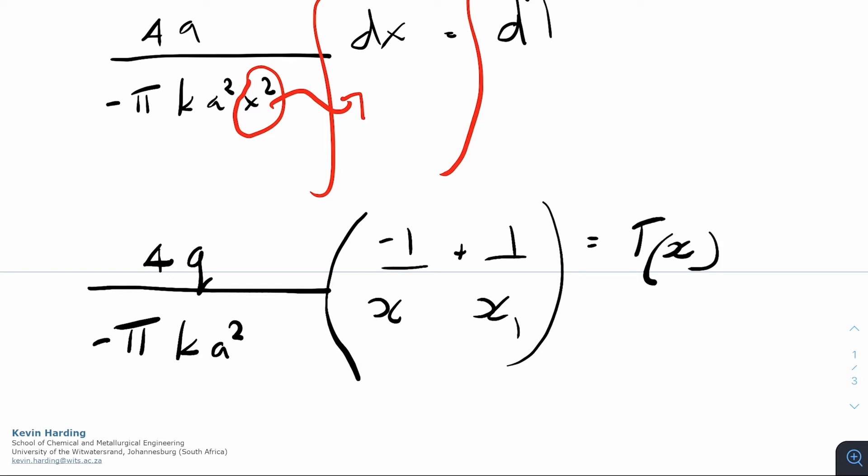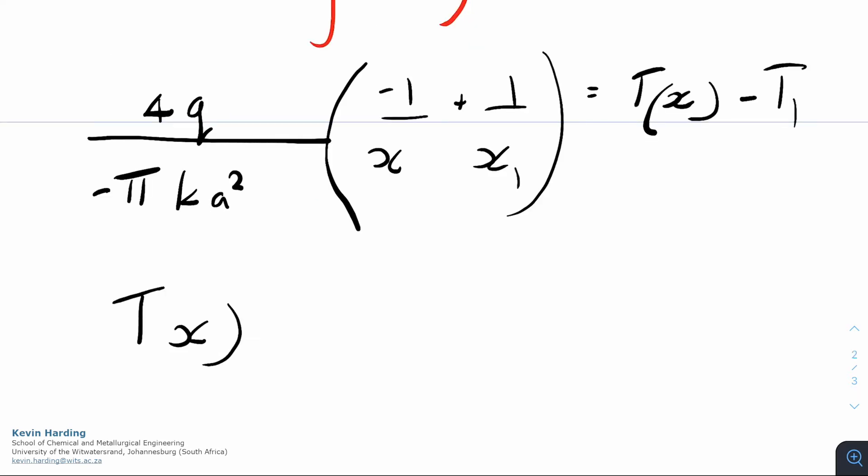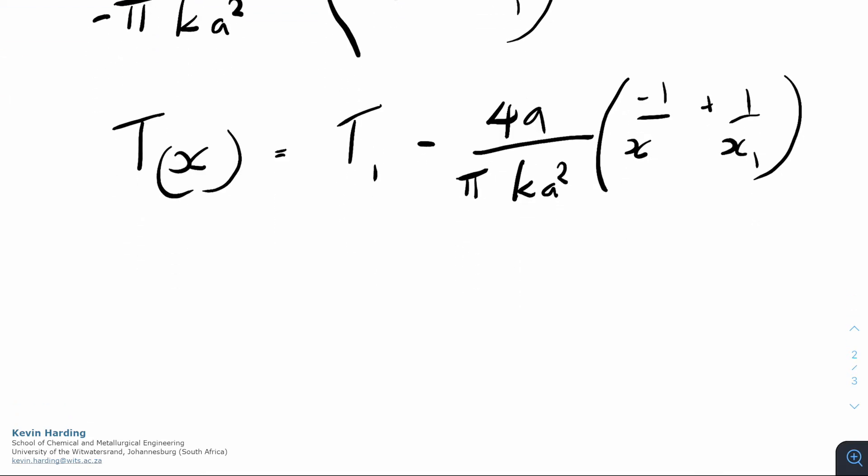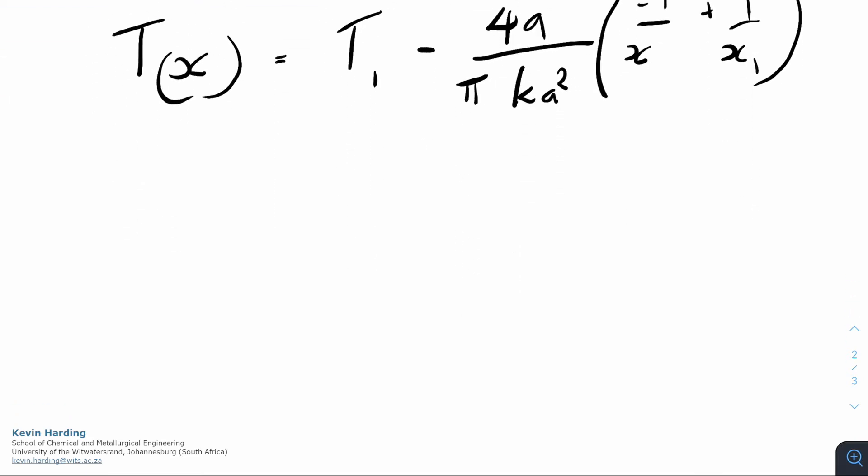Rearranging that, we can write it as tx on the left-hand side. Take the minus t1 onto the other side so it becomes a positive, and we still have a minus 4q divided by pi k a squared, multiplied by the brackets of minus 1 on x plus 1 on x1. So that is now a function of the temperature profile, tx, in terms of t's, q's, k's, and x and x1.